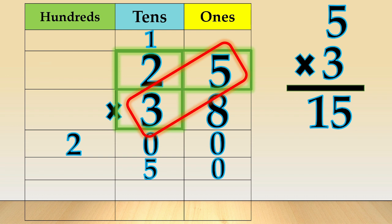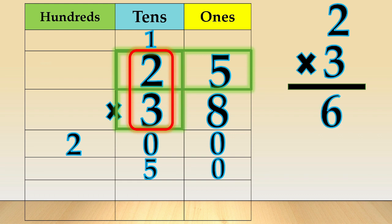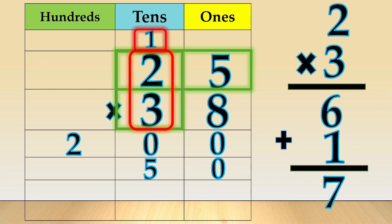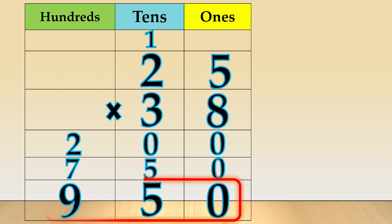Then, multiply 2 times 3 is equal to 6. Then, add the 1 ten that you have carried over. So, 6 plus 1 is equal to 7. Now, we add the partial products to get the final answer. 0 plus 0 is equal to 0. 0 plus 5 is equal to 5. 2 plus 7 is equal to 9. Our final answer is 950.